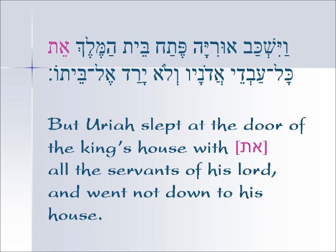Here is another example of a standalone Aleph Tav that has to be translated as 'with.' Uriah is off in battle. David has gotten his wife Bathsheba pregnant and calls him home, trying to lure him into going home and sleeping with her so that they can say the child belongs to her husband. But Uriah refuses; he actually laid down and slept at the door of the king's house, Aleph Tav all the servants of his lord, referring back to David. Clearly Uriah is not all the servants — Uriah is with all the servants. So just by the meaning, we have to say that this Aleph Tav translates as 'with.'